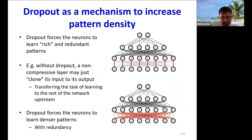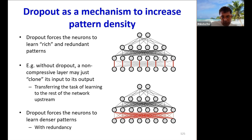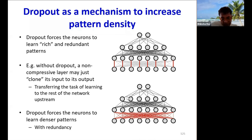There's also a second explanation for why dropout works. When we train a network in the usual manner, there is no explicit constraint that forces each layer to actually learn something. One of the layers might just learn to copy the output of the previous layer and pass it through unchanged, effectively losing a layer from the network. By randomly switching off neurons, dropout ensures that the neurons don't learn such trivial relationships, but actually learn to recognize denser, more informative patterns.